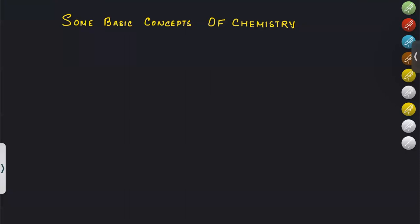Hello everyone, a very warm welcome to each one of you. We will start with some basic concepts of chemistry today. Chemistry deals with the structure and properties — both physical and chemical — of substances. To understand these, we need to go to the micro level and see what substances are made up of: atoms and molecules.